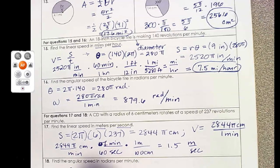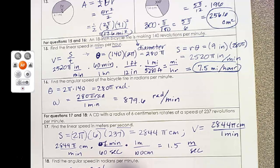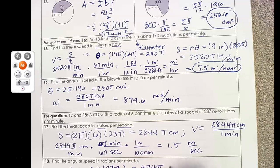Angular speed, you're just going to find the θ. So 2π times 237, which is 474π radians per minute.